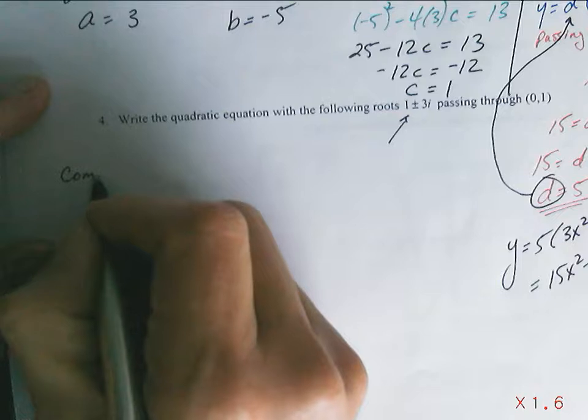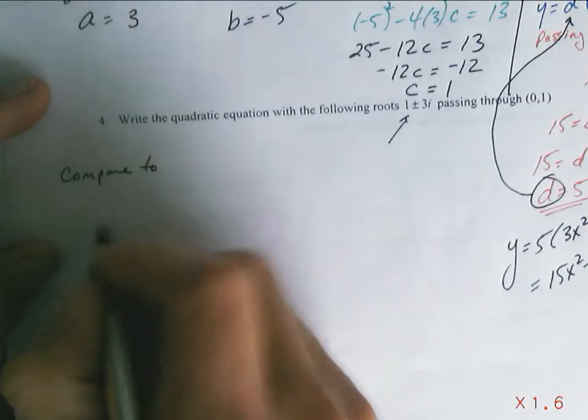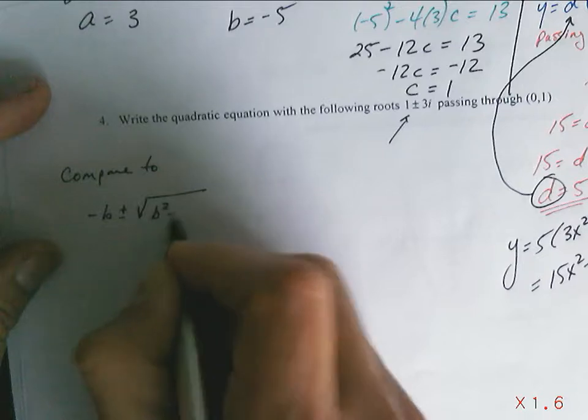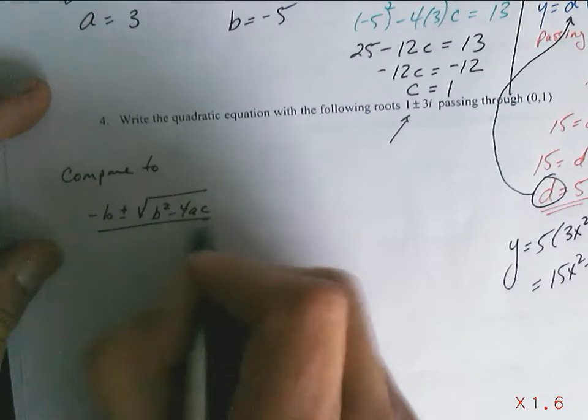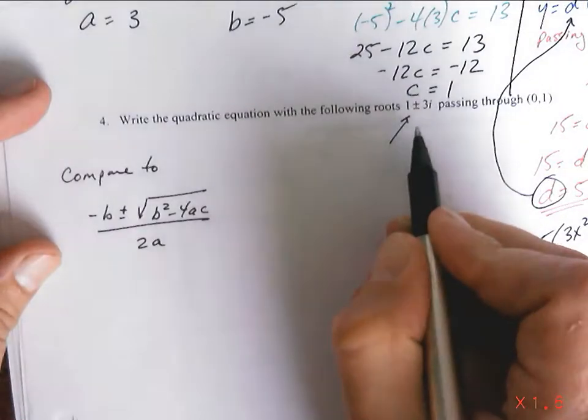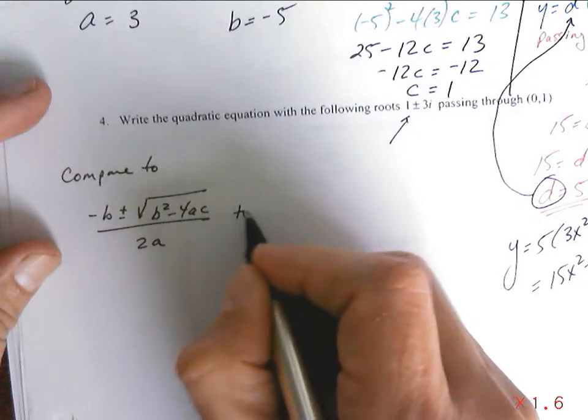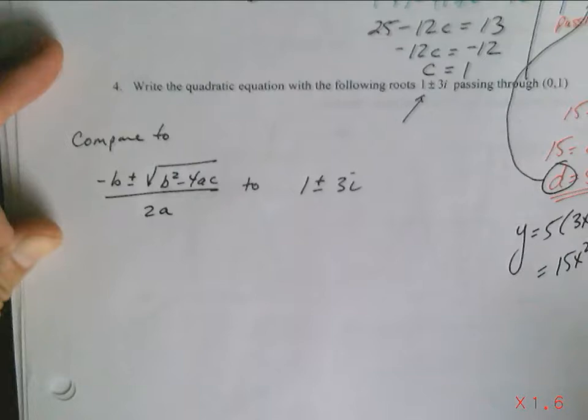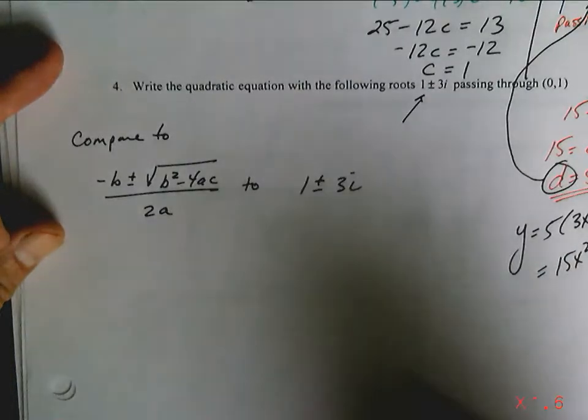You want it to compare to minus b plus or minus square root b squared minus 4ac over top of 2a, but it don't look like that. It don't look like that. So let's work through it.